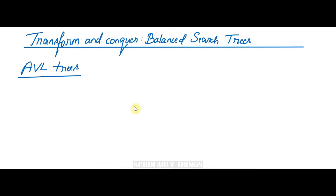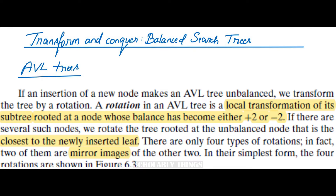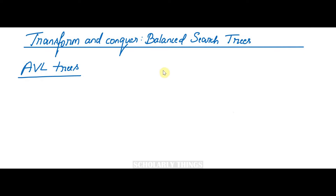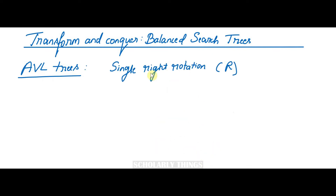During insertion of a new node, the balance factor of the AVL tree can be disturbed. If the tree becomes unbalanced, we perform rotations — a rotation is a local transformation of a subtree at a node whose balance has become +2 or -2. If there are many such nodes, we choose the one nearest to the newly added node. There are four main types of rotations: single right rotation (R), single left rotation (L), double left-right rotation (LR), and double right-left rotation (RL).